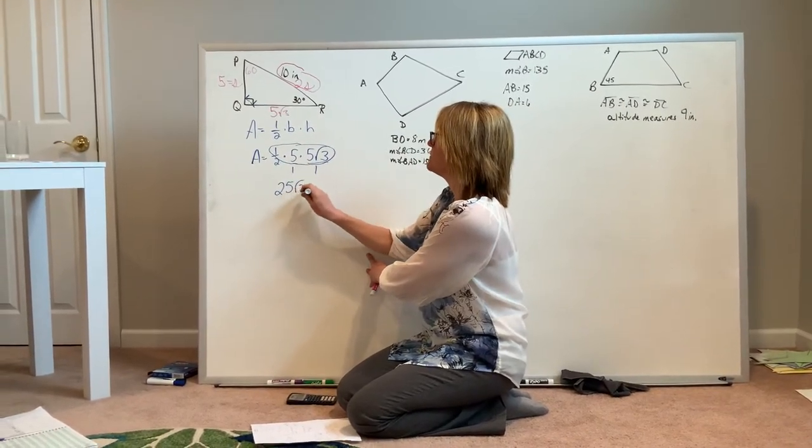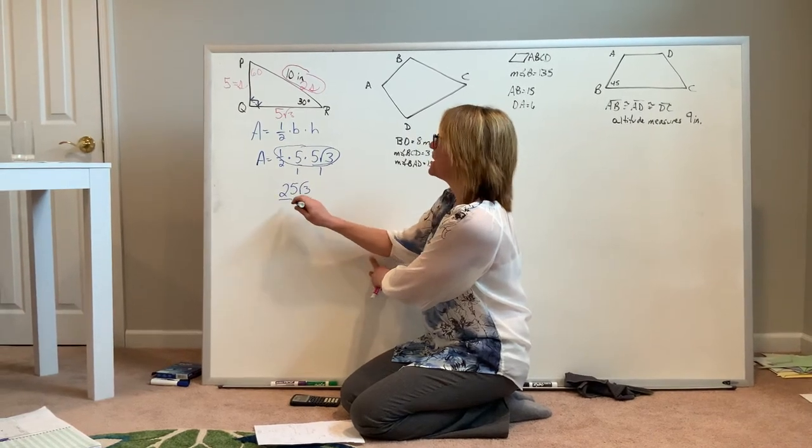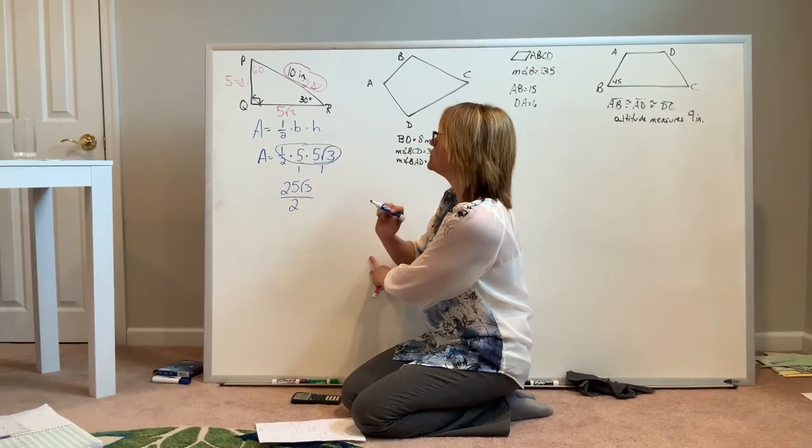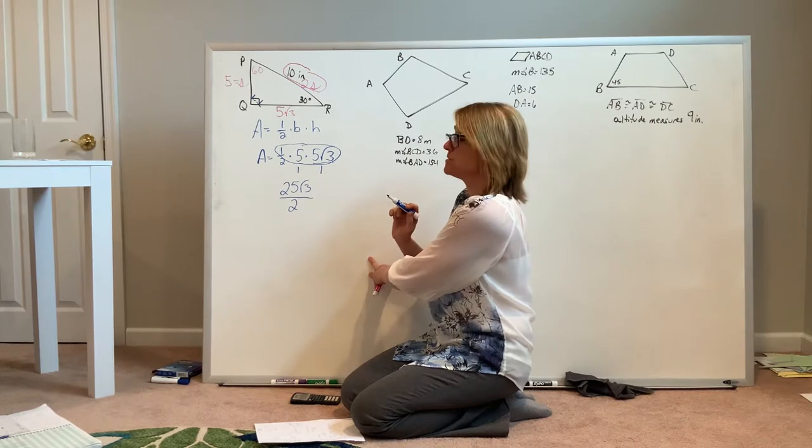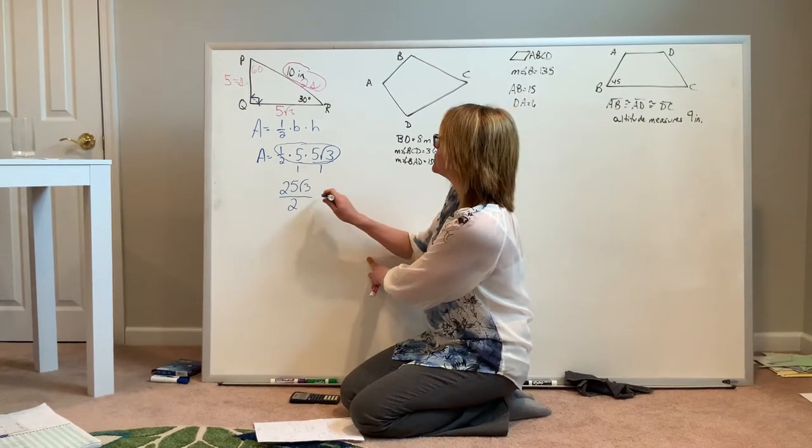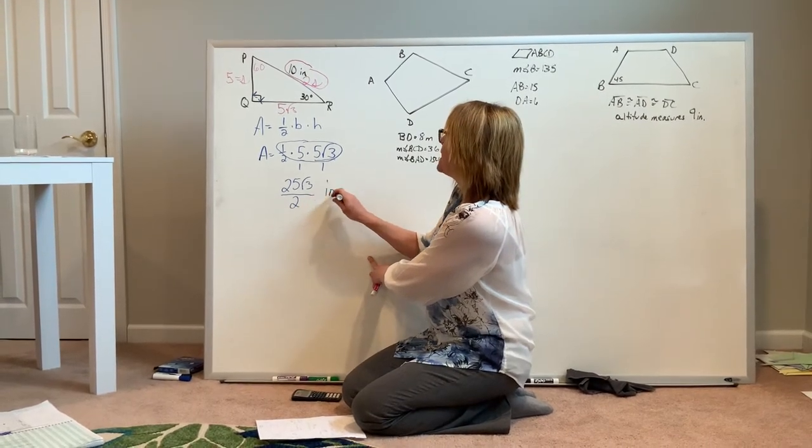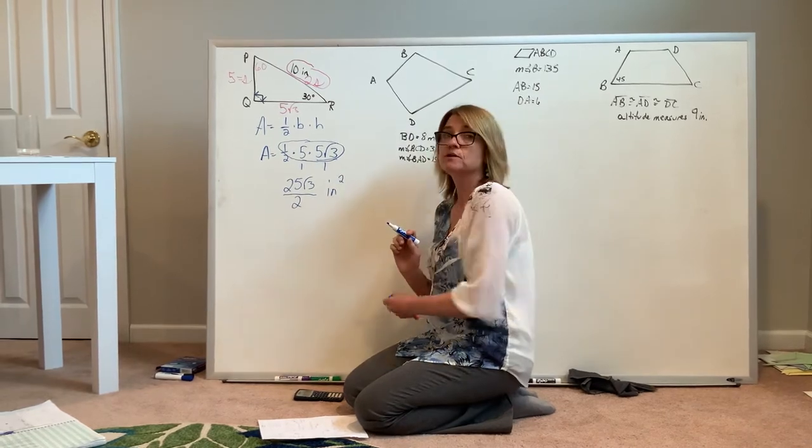I can multiply my numerators, 25 square root of 3, multiply my denominators, 2 times 1 times 1 is 2. So my final answer in proper form is 25 square root of 3 halves, and make sure that you always include a unit with your answer.